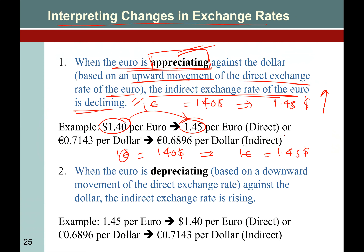If it is written in indirect quotation and you divide it by one, then you need less Euro to buy $1. If you take the inverse, this scenario becomes opposite and it looks like the Euro is depreciating.